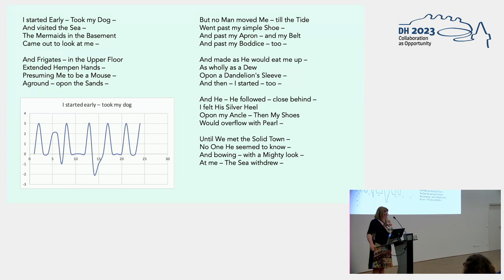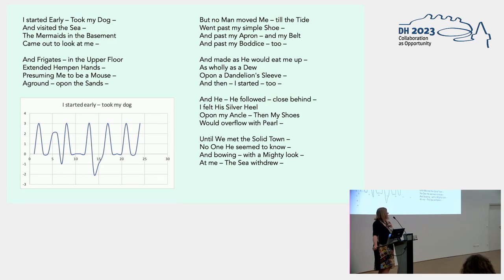Here's one — 'I Started Early Took My Dog' — it has a periodic motion that echoes the back and forth of the waves coming up the shore. It's not that this graph necessarily tells us something that is inaccessible by human reading; rather the graph draws attention to an aspect of the poem that we may not have noticed. The first thing that hit me when I read this poem is the way that sexual violence is represented and aestheticized — that's probably what my students would notice as well. So the graph is a productive constraint which might direct our attention elsewhere.